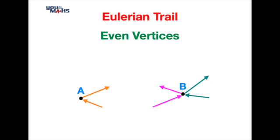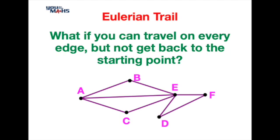So what happens if you can travel across every edge of a network but you're not able to finish at the vertex where you actually started? Let's have a look at the following graph where we want to visit every edge of the network exactly once and we'll use the green line to indicate the trail that we're following.